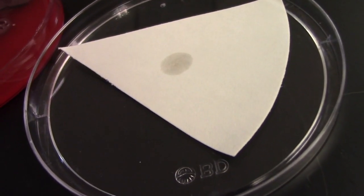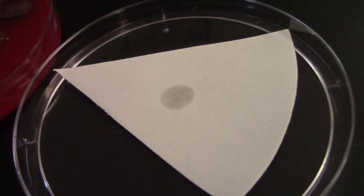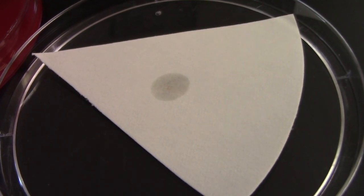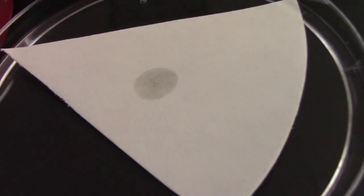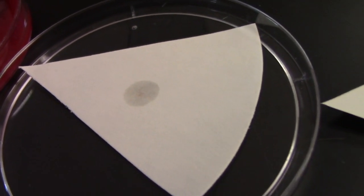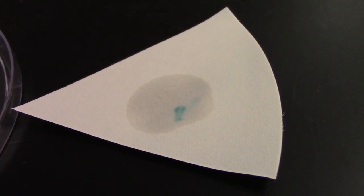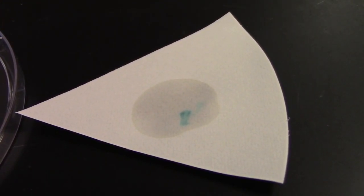The indole test tests whether the bacteria produces an enzyme that's able to split indole from tryptophan. This one shows no color change, so it's indole negative. You might see a slight pinkish color on a negative test, but you will not see that distinctive blue-green color that you see on the positive test.